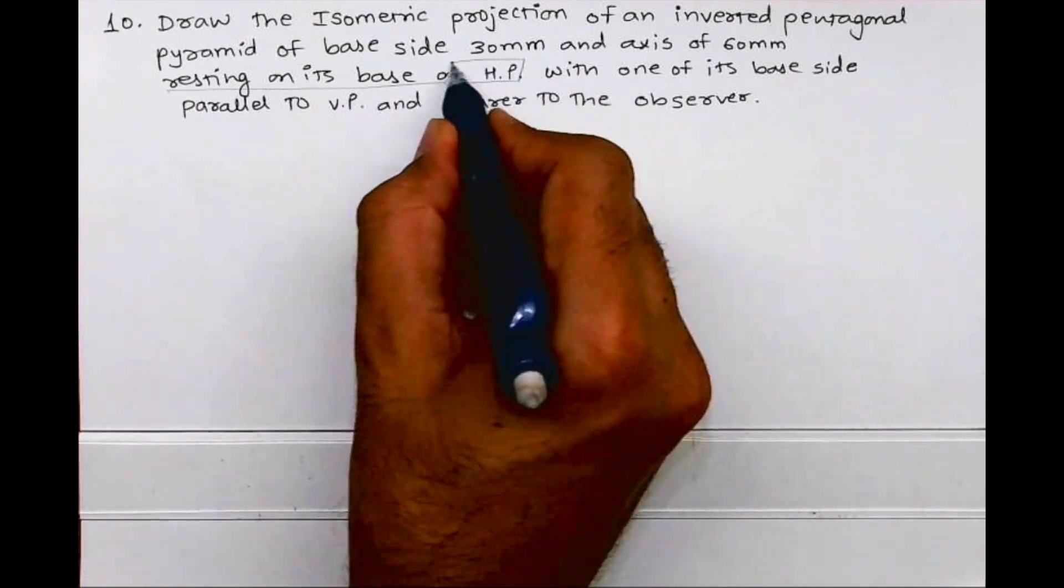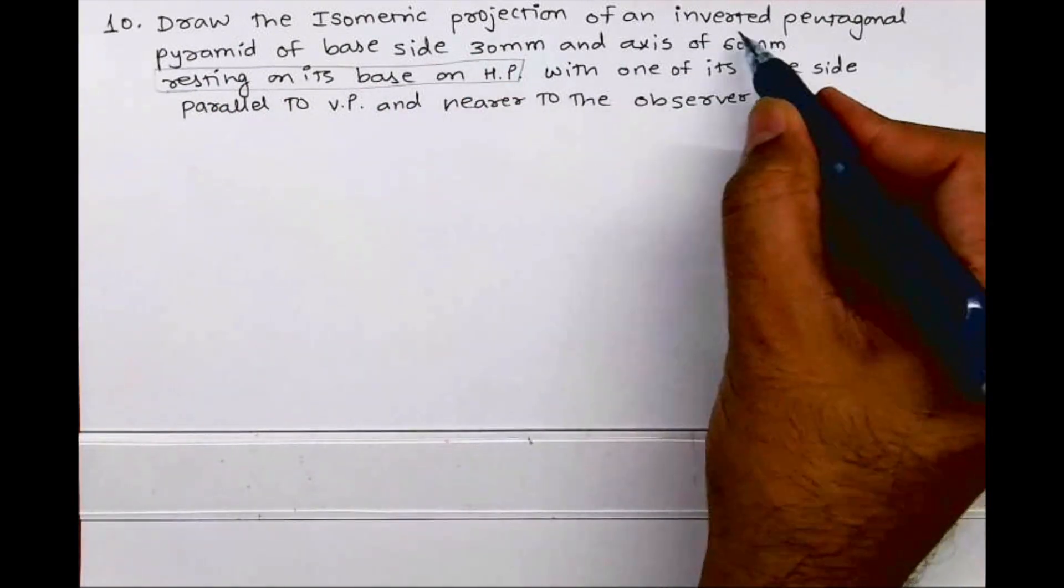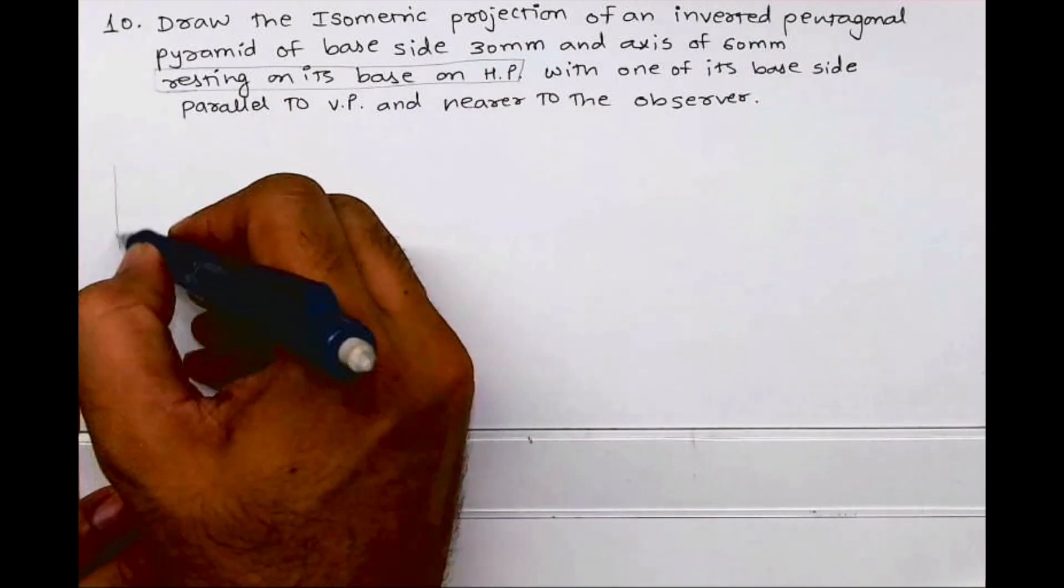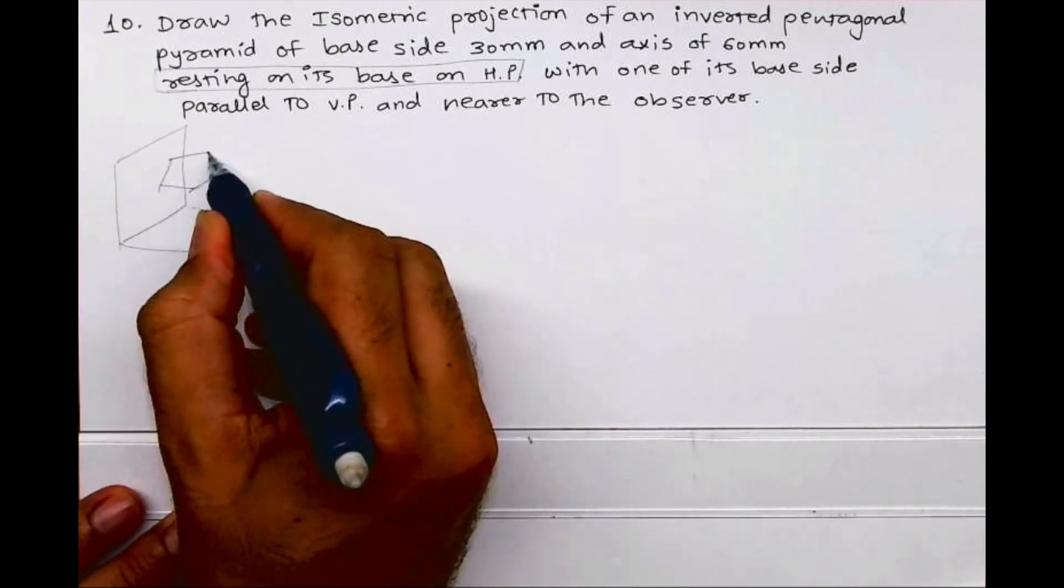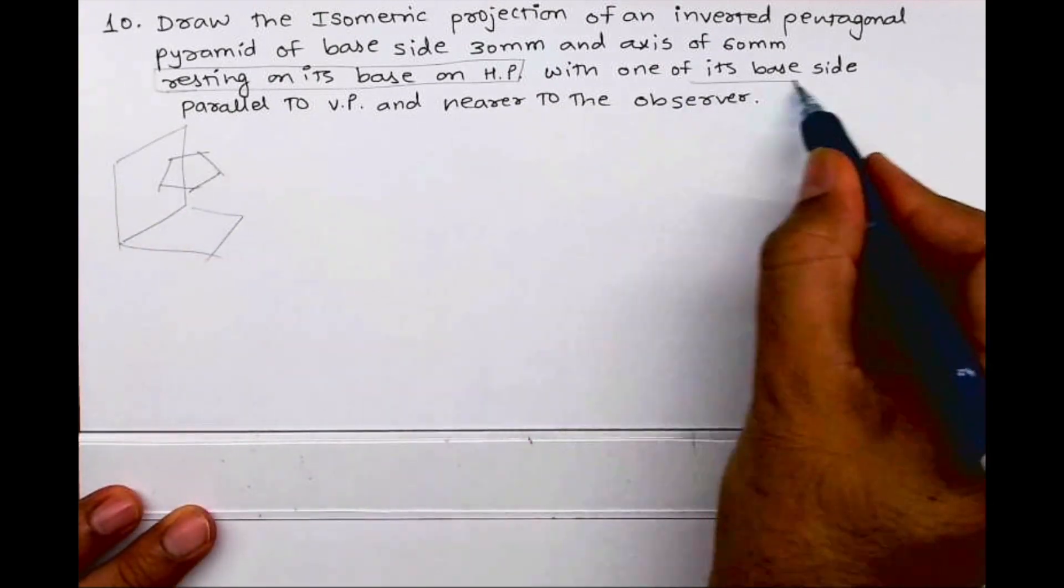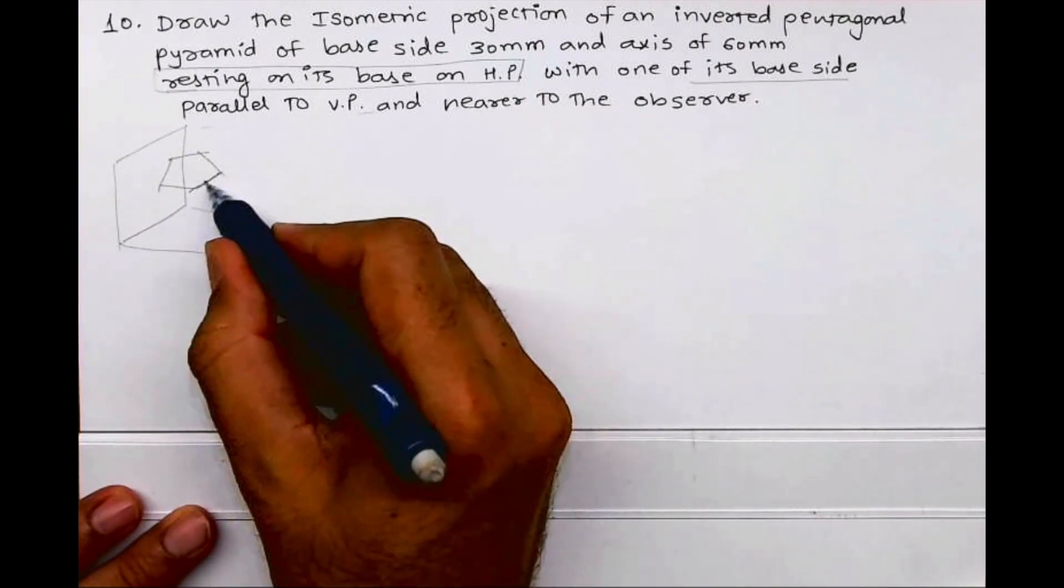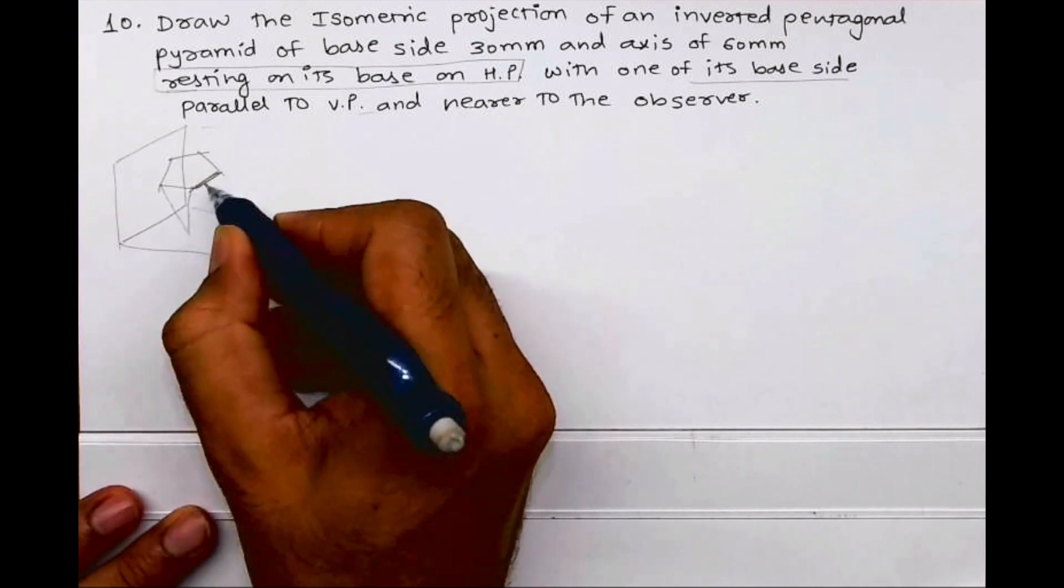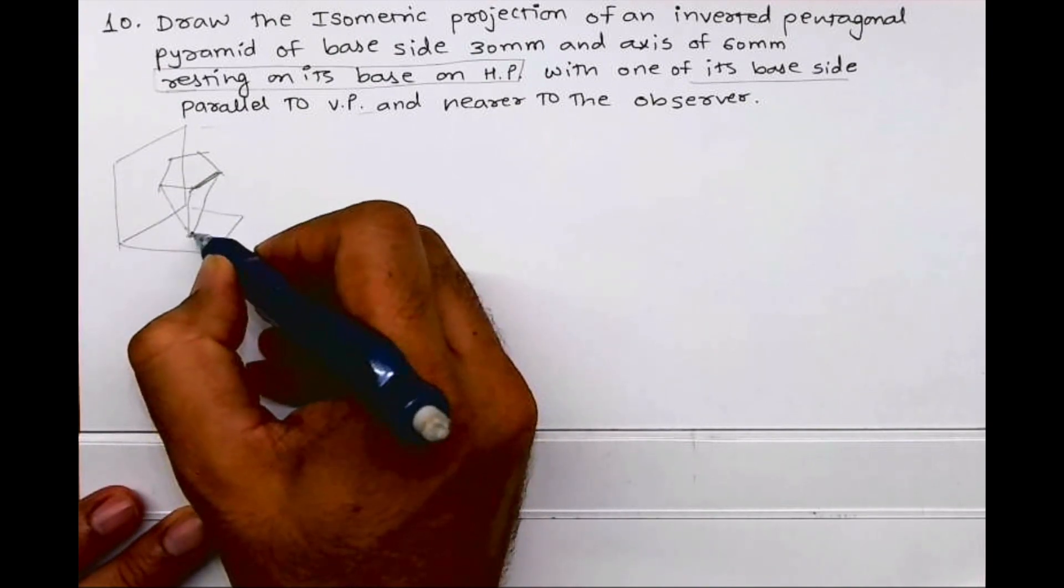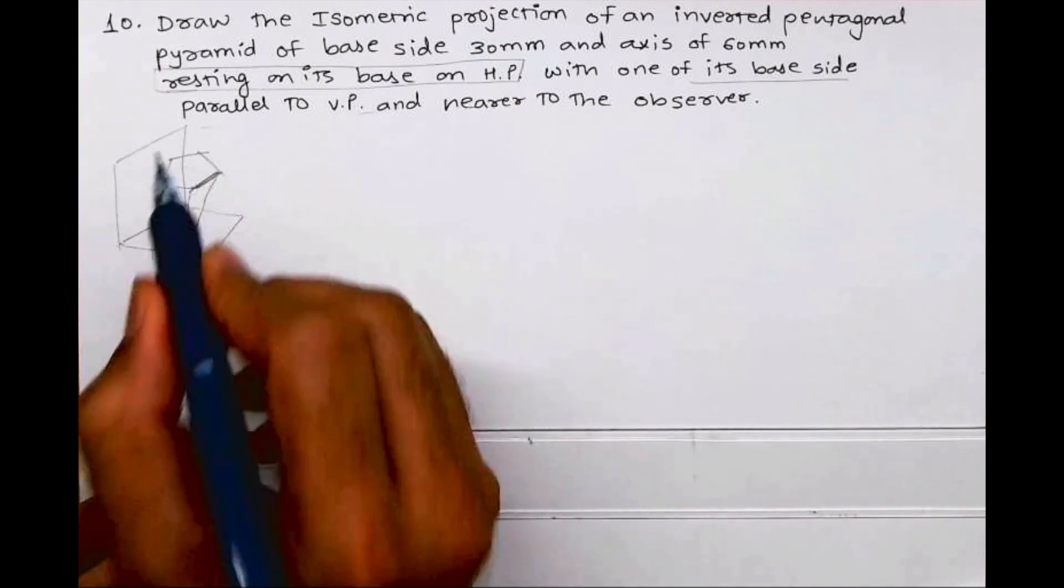Now I have an issue with this sentence. It cannot rest on its base on HP and be inverted, right? So if I draw HP and VP, inverted it will be like this. One of the sides is parallel to VP and nearer to the observer, so it will be like this. Then they have said it is inverted, so it will be like this.